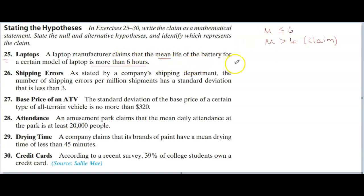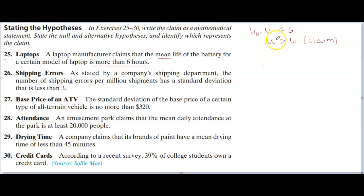The next step is to label these claims as H0 or HA — the null hypothesis or the alternative hypothesis. Whatever claim has the equal sign, we're going to label that as H0, the null hypothesis. The claim without the equal sign — like the original claim here — will be labeled as HA, or sometimes H1. It really doesn't matter; it's the same thing. That was problem number 25.